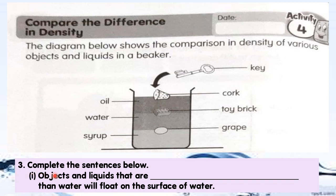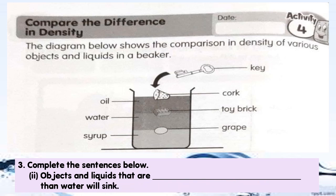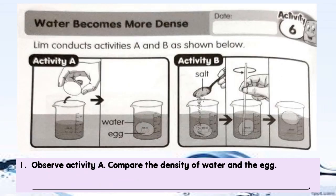Question 3: Complete the sentences below. (i) Objects and liquids that are _____ than water will float on the surface of water. Fill in with the correct answer. (ii) Objects and liquids that are _____ than water will sink. Fill in your answer. Now turn your activity book to page 68.